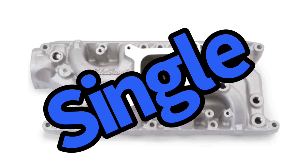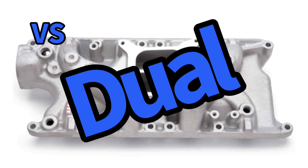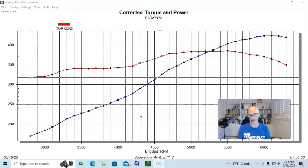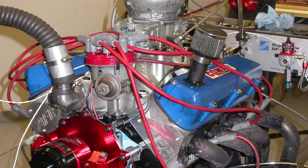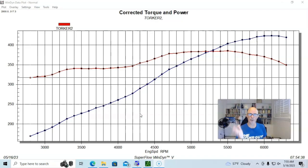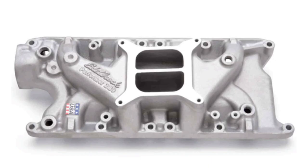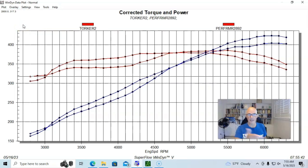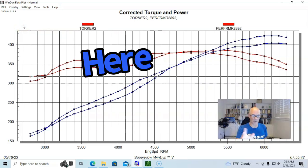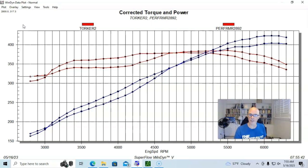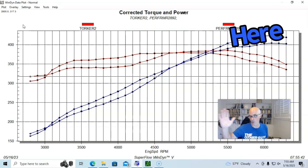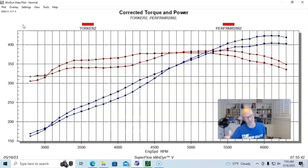We compared our single planes, we've compared our dual planes, now we have to compare them to each other and we'll take a look and see how they compare on your typical kind of hot little street strip small block Ford. This is our Torker 2, our single plane Torker 2, and here's how it compares to the Performer 289 dual plane. The dual plane, as we have come to expect, made more power down low and in the middle part of the curve up to 4700 RPM. And then the single plane made more power after that, all the way out past 6000 RPM.